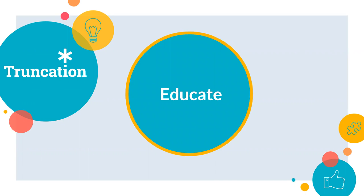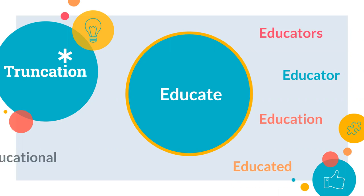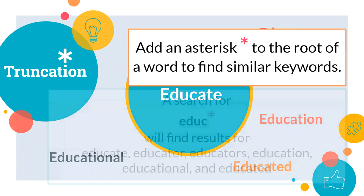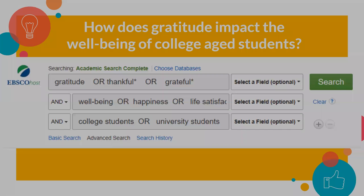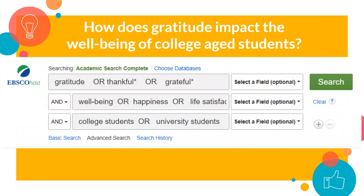Databases are very specific and only search for the word that you put in. For example, if you put in the word educate, it will only look for that word — it would miss similar words like educators, education, or educational. To simplify your search without typing in every similarly spelled word, add an asterisk to the root of a word to retrieve all words with the same beginning.